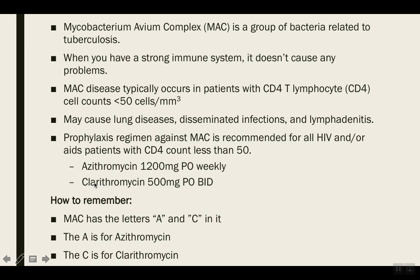To remember that you use azithromycin or clarithromycin as prophylaxis in patients with a CD4 count less than 50, just look at the word MAC itself. MAC contains the letters A and C — A is for azithromycin, C is for clarithromycin. That's the easiest way to remember the preferred regimens for MAC prophylaxis. This is what we call N-word acronyms.